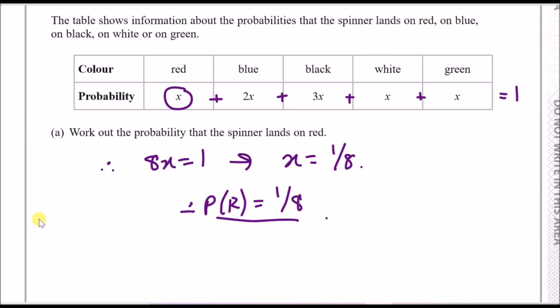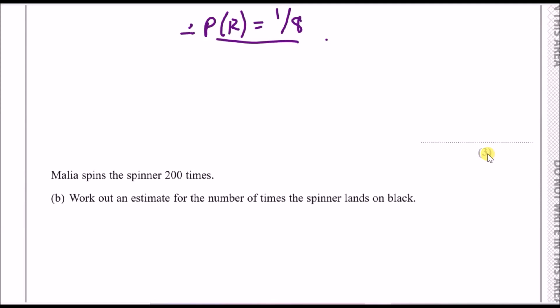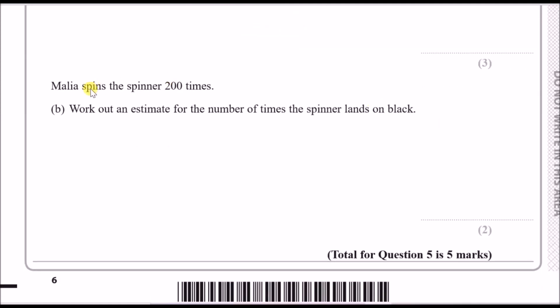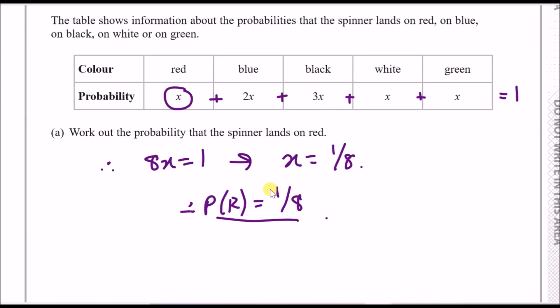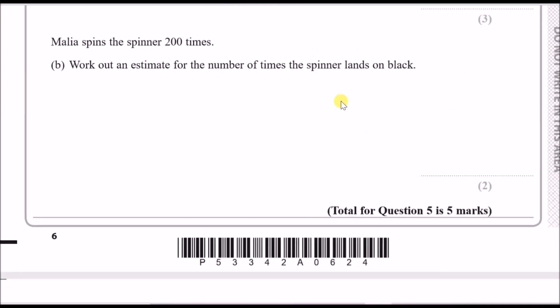Amelia spins the spinner 200 times. Estimate the number of times it lands on black. The probability of black is 3x = 3/8. Multiply by 200: (3/8) × 200 = 75. So the estimated number of times landing on black is 75.